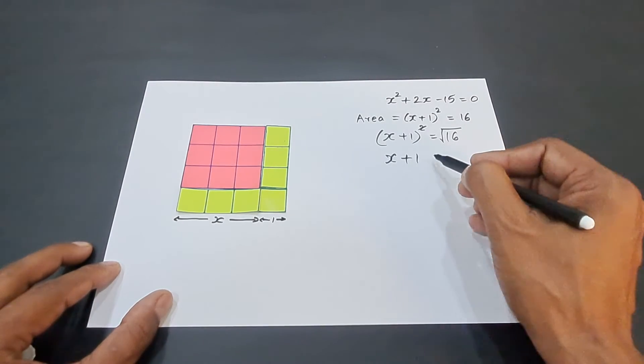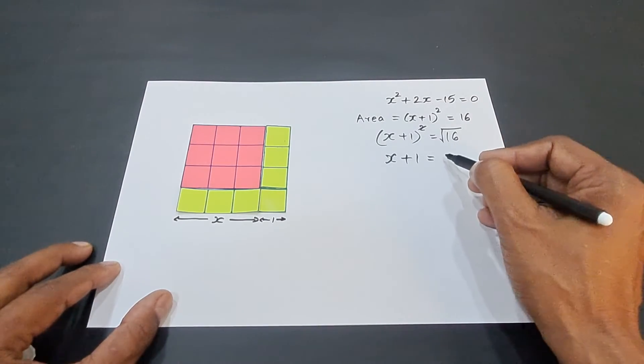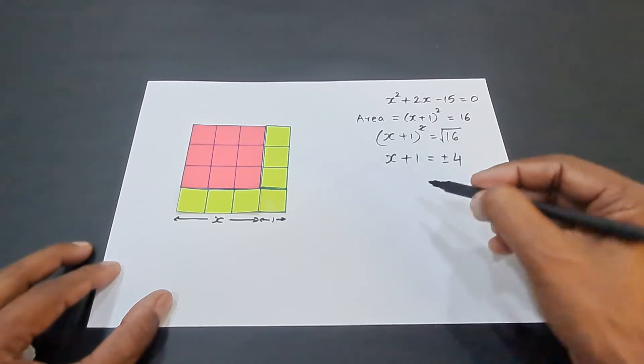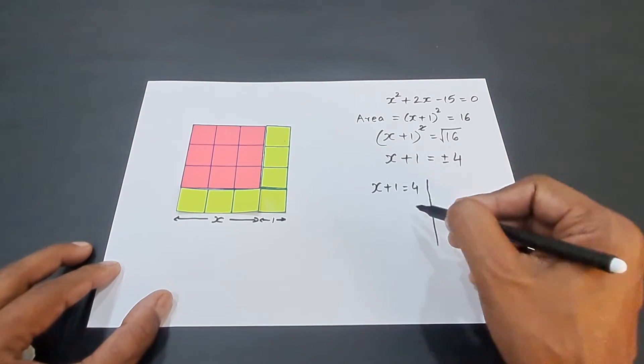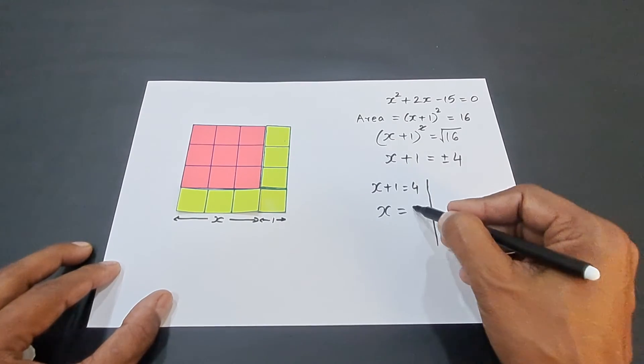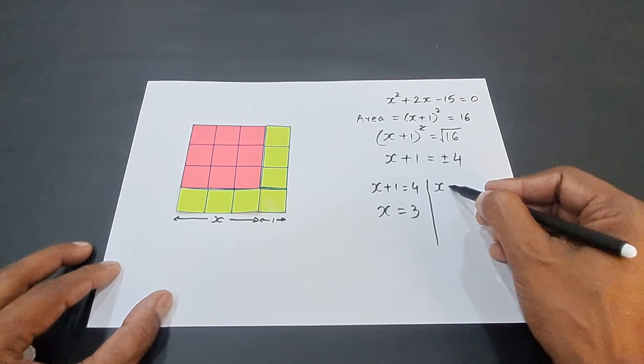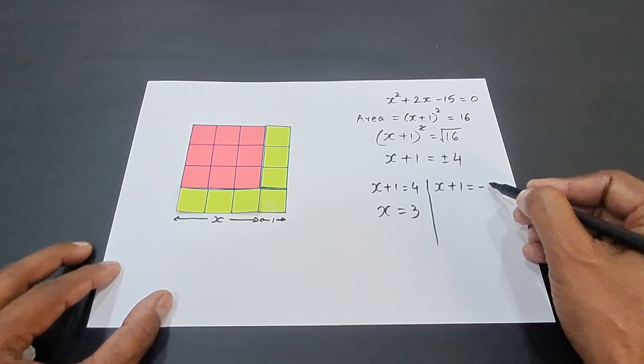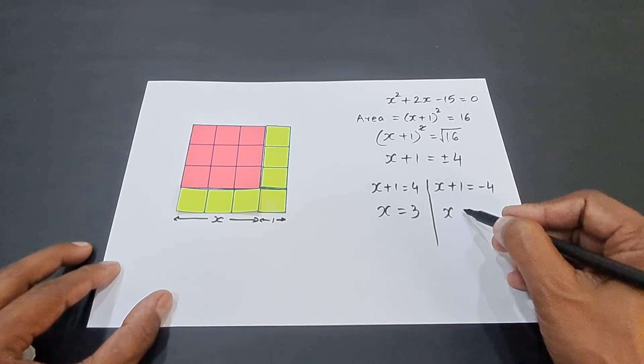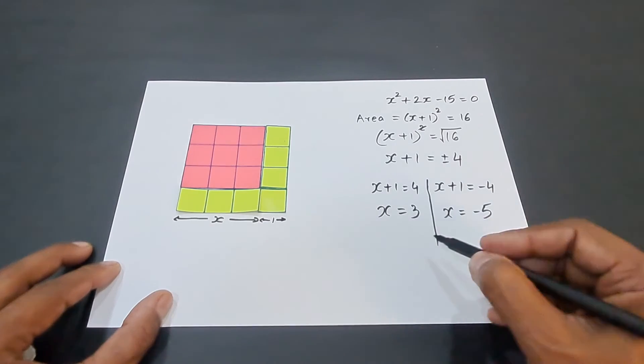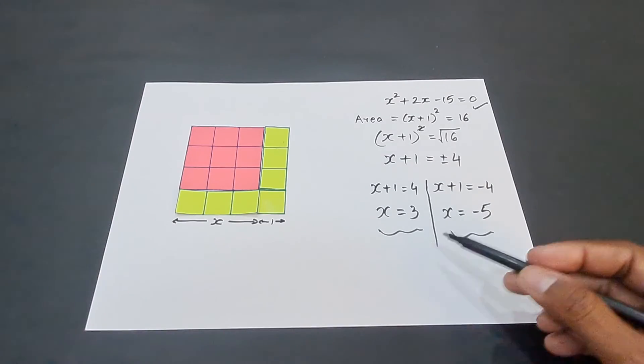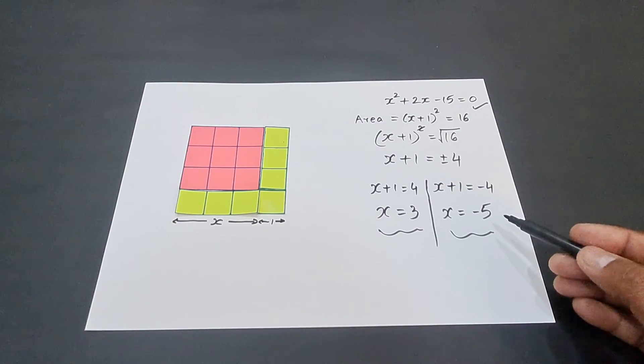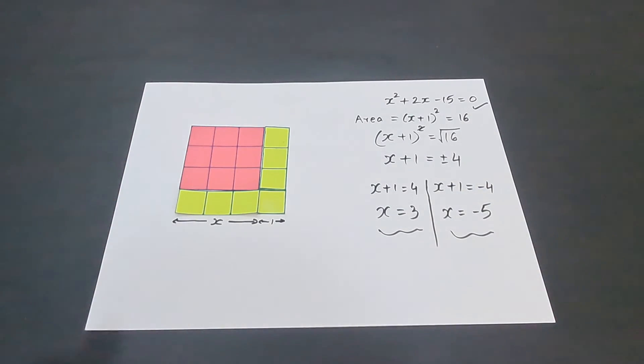Therefore, x + 1 will be equal to ±4 and then when we equate x + 1 with 4, you will get the first root that is x = 3 and when you equate x + 1 with -4, you get the second root x = -5. Therefore, the roots of this quadratic equation are 3 and -5 which is obtained through the activity.